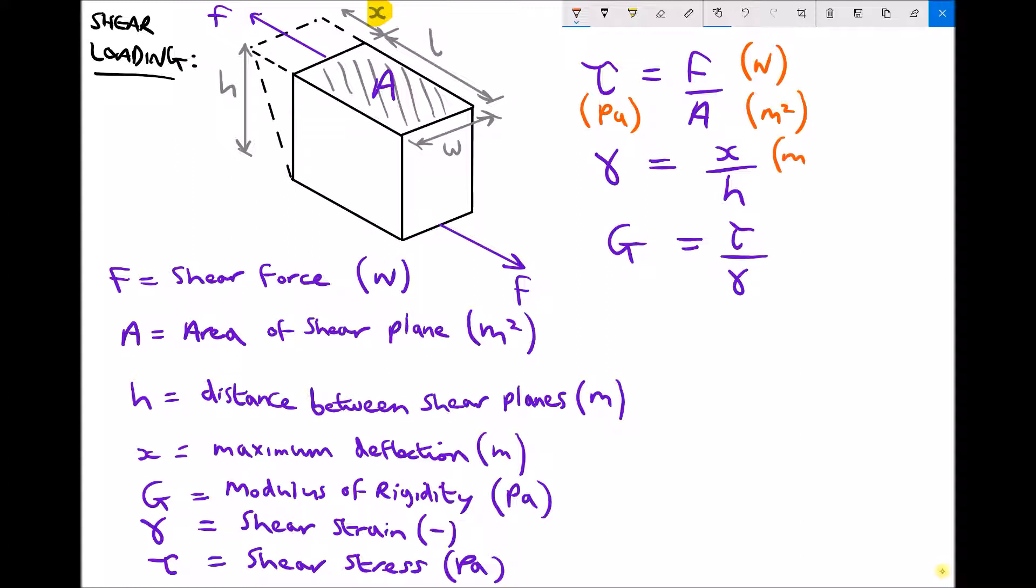When we come to calculating gamma, we have to make sure that we use meters for our deflection and meters for the distance between the shear planes. If those units are not the same, then we're going to get an answer that's not accurate for gamma. Finally, providing we work in pascals for our shear stress, that will always yield an answer in pascals for our modulus of rigidity.